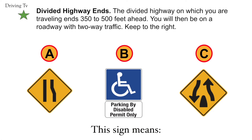Divided highway ends. The divided highway on which you are traveling ends 350 to 500 feet ahead. You will then be on a roadway with two-way traffic. Keep to the right. The correct answer is C. Divided highway ends.